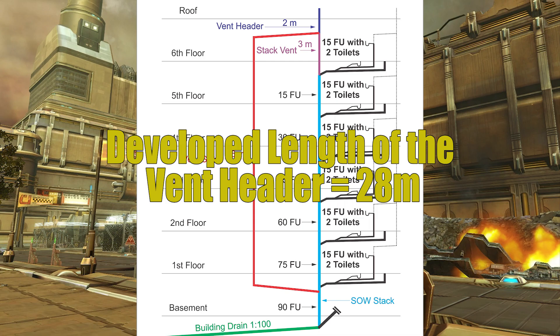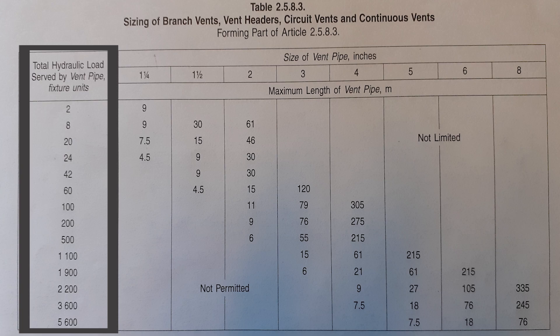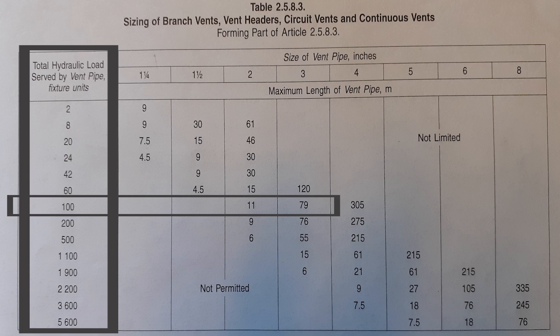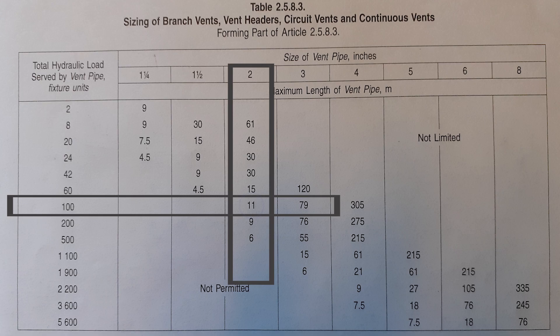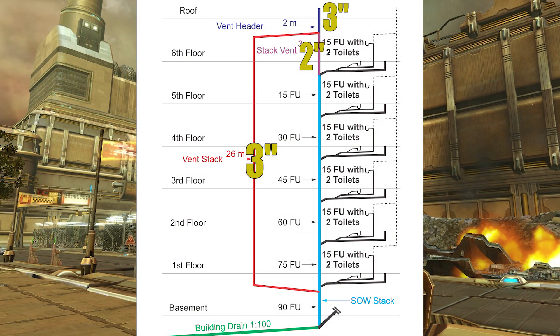Now let's reference Table 2583. Going down the left-hand side to select the hydraulic load — I've got 90 fixture units, so I go down to 100. Going across, 2 inch is only good to a developed length of 11 meters and I need 28. But 3 inch — I can go all the way to 79 meters of developed length, so 3 inch is still good. The only thing we'd want to do is upsize that vent header by one pipe size just before it penetrates the roof for frost closure.